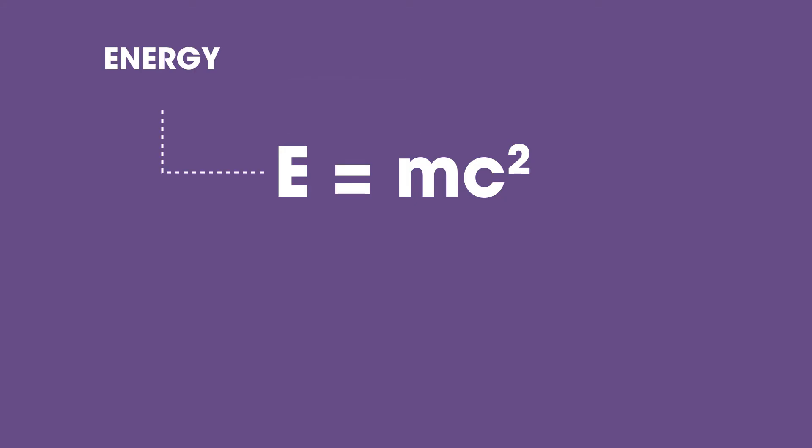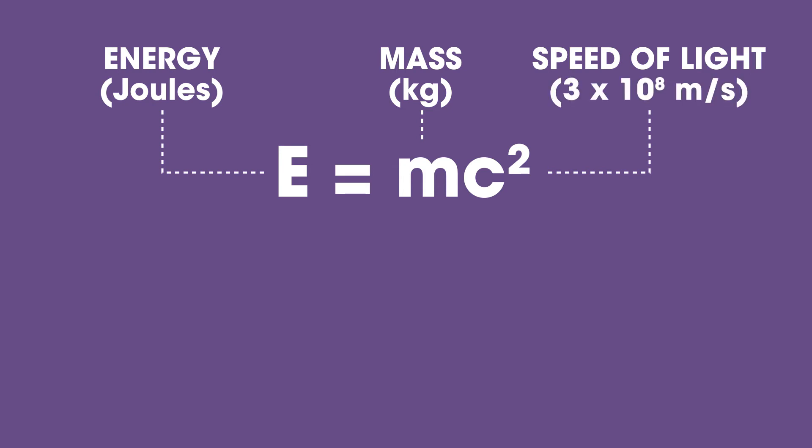E equals energy measured in joules. M, mass in kilograms. C, speed of light, which is 3 times 10 to the power of 8 meters per second.